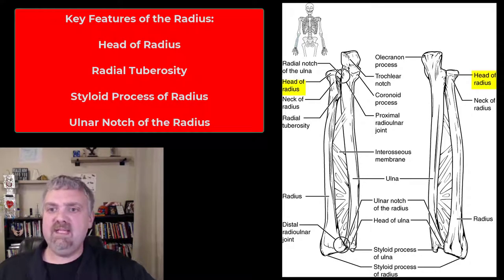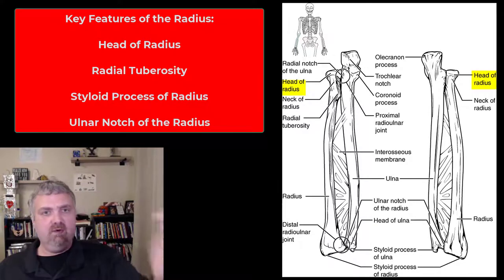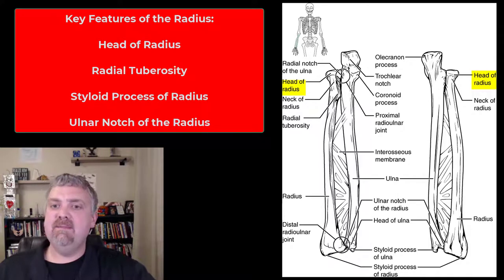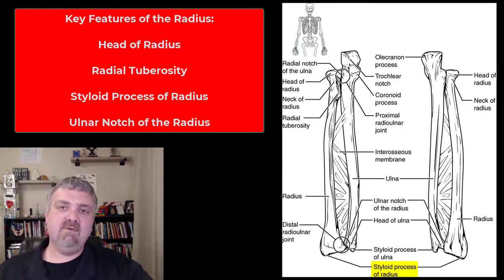All right, let's start with the radius. We have that head of the radius, which we already said, that circular structure there plays a big role in pronation and supination movements. The radial tuberosity there is going to be an insertion point for the bicep tendon. Distally, you have the styloid process of the radius.